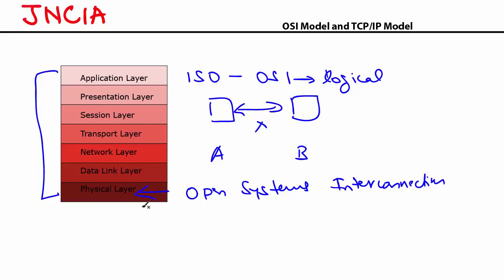I'm reminded of my college days when I studied the OSI model for the first time. I thought the application layer actually represents the applications or software we use on the computer, and the physical layer represents physical devices like your network interface card and electrical cables. It took me a long while to realize that the whole concept is logical. The physical layer sounds like it's actually physical, but it's not. So keep that in mind — everything is just a logical concept.